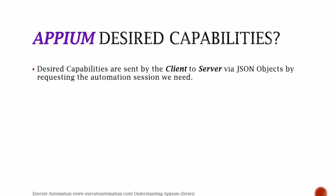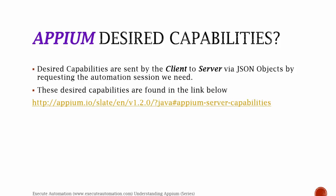Appium's desired capabilities — what is it actually? The desired capabilities are sent by the client to the server via a JSON object by requesting the automation session we need, as we already discussed in part 3 of this video series. These desired capabilities are found in the links below, and there are a lot of links available in the upcoming slides of this video series. These desired capabilities are what make the automation session happen in Appium.